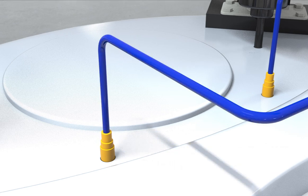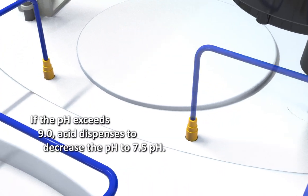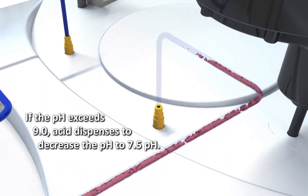In the event the pH increases to over 9.0 pH units, the acid dispenses to decrease the pH to 7.5.